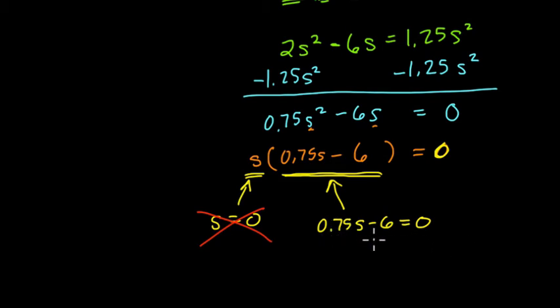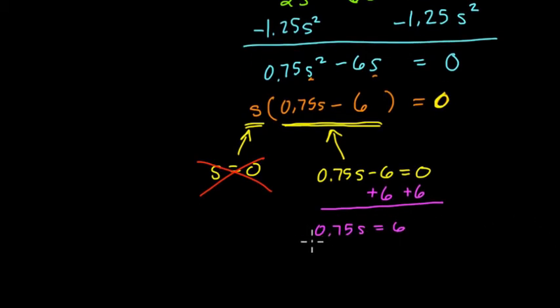So here, if we solve for S, how do we do that? We add 6 to both sides, and what happens then? We get 0.75S equals 6. And then to solve for S, we can divide both sides by 0.75, or 3 fourths.